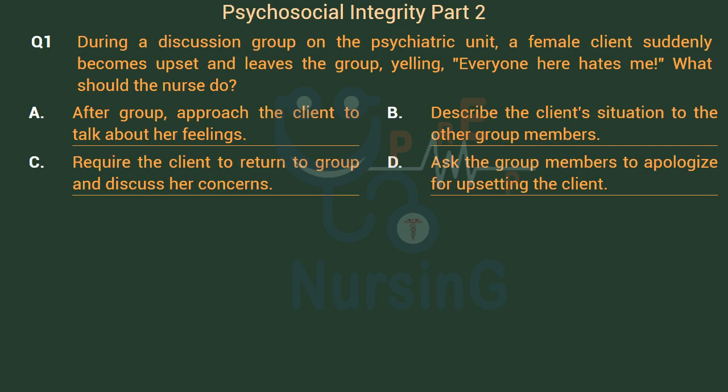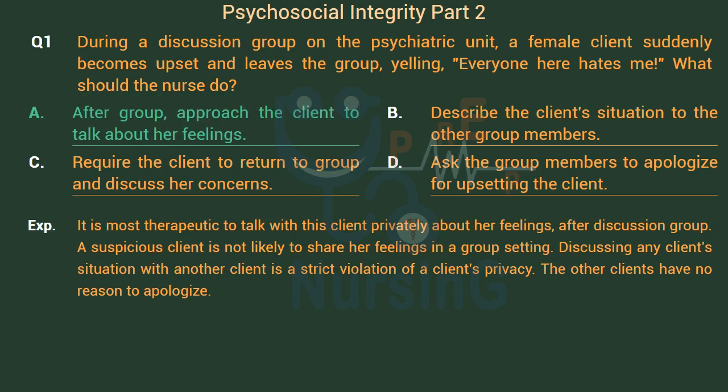The right answer is Option A: After group, approach the client to talk about her feelings. It is most therapeutic to talk with this client privately about her feelings. A suspicious client is not likely to share her feelings in a group setting. Discussing any client's situation with another client is a strict violation of the client's privacy. The other clients have no reason to apologize.